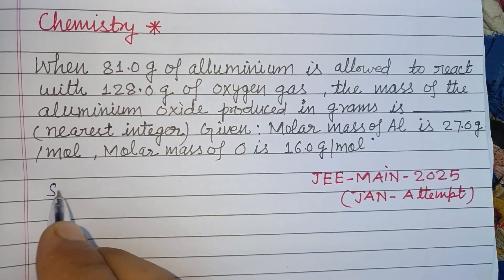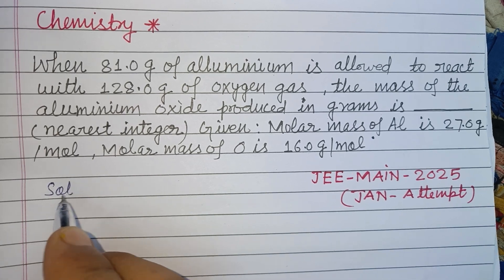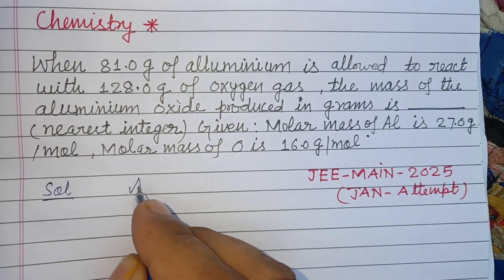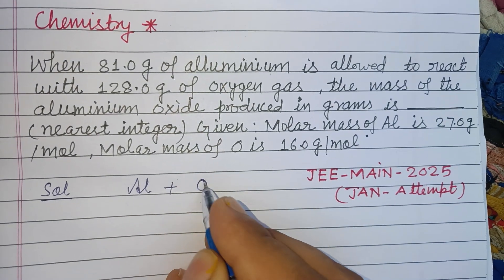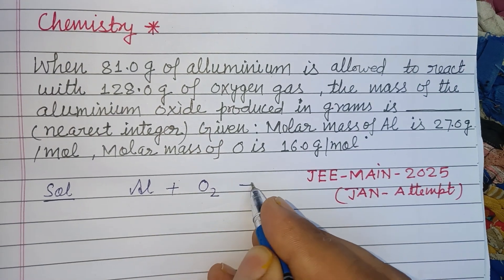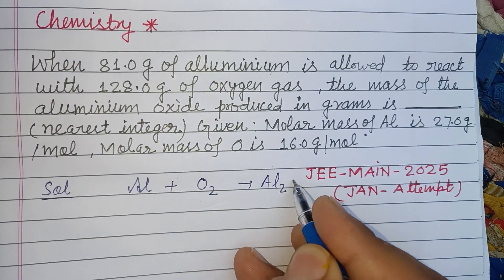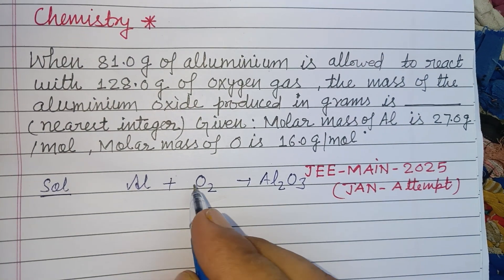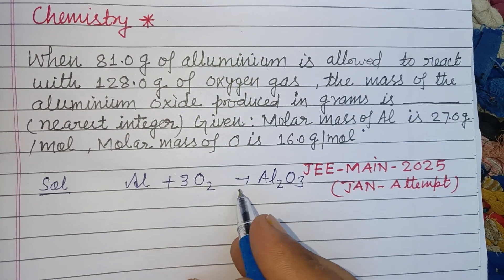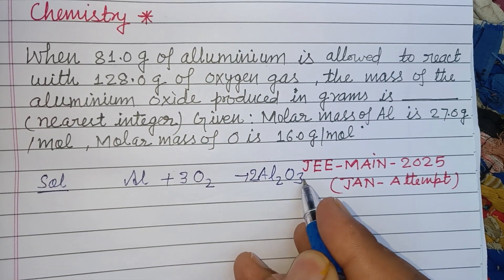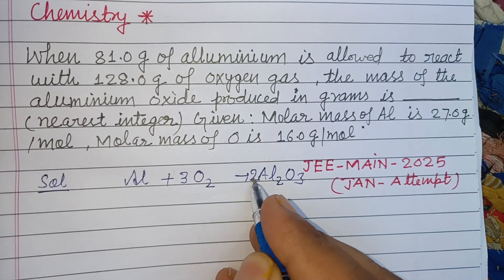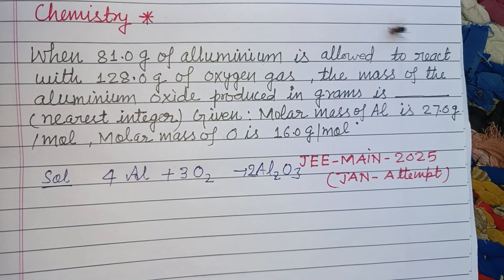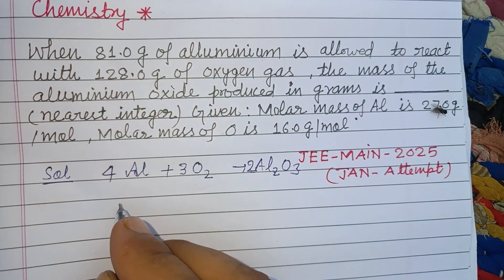The reaction between aluminium and oxygen gives us aluminium oxide: Al + O₂ → Al₂O₃. To balance the equation, we multiply to get 6 on each side, giving us 4 Al on the left. So the balanced equation is: 4Al + 3O₂ → 2Al₂O₃.